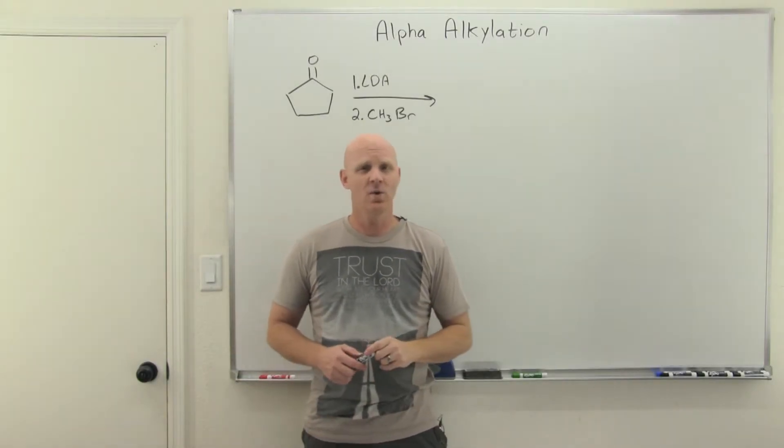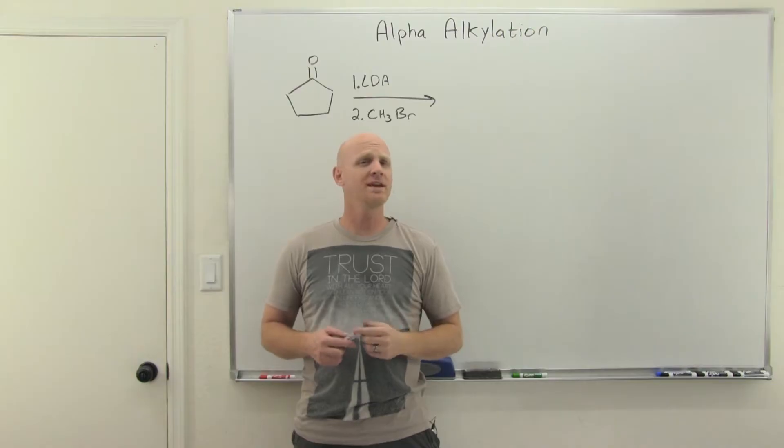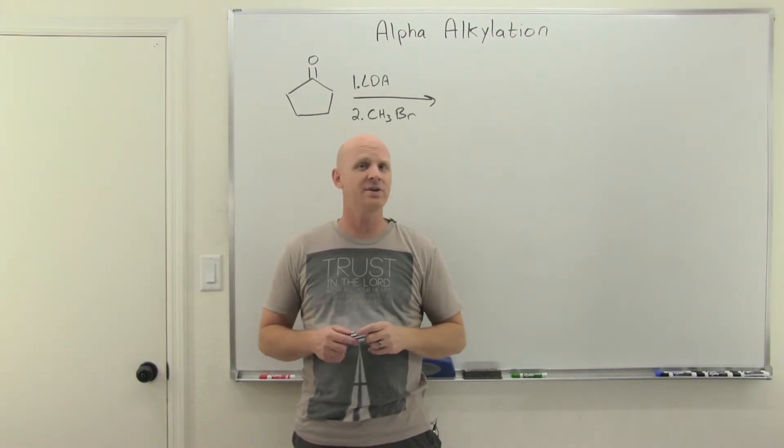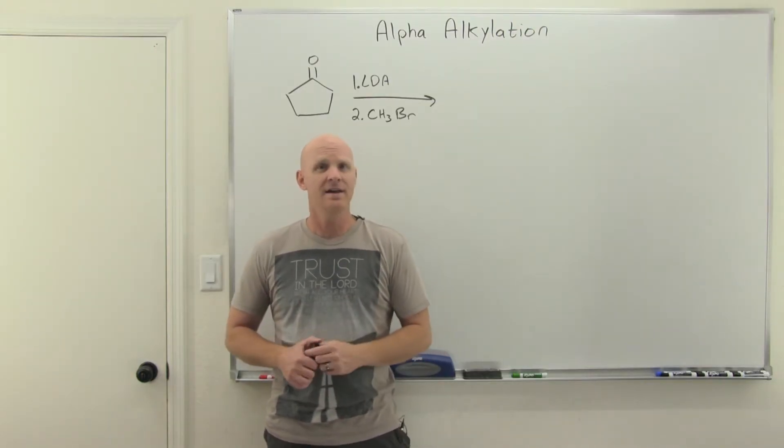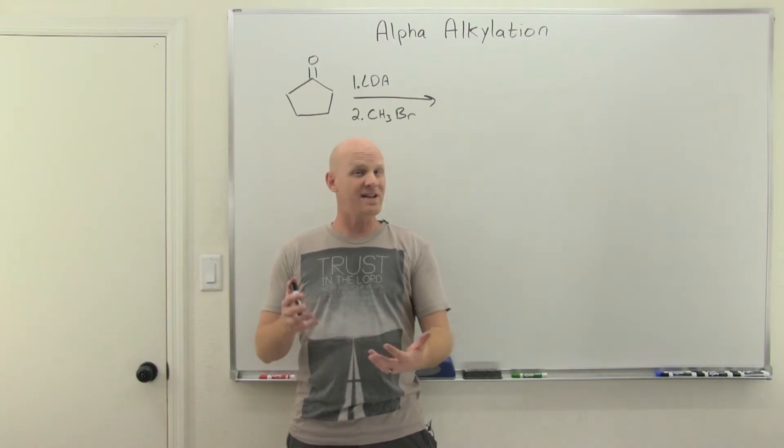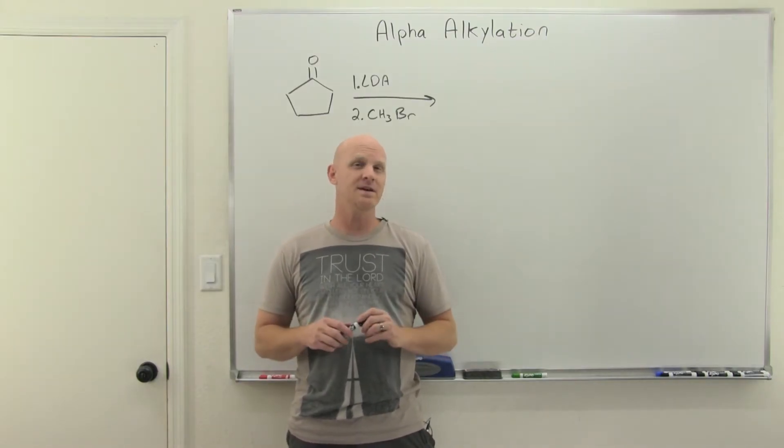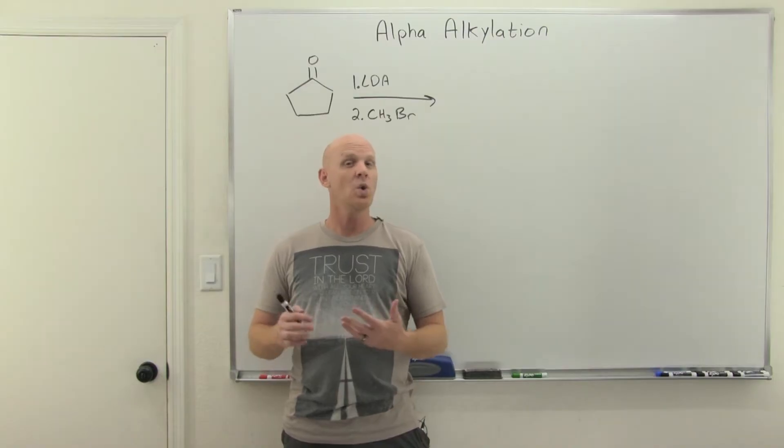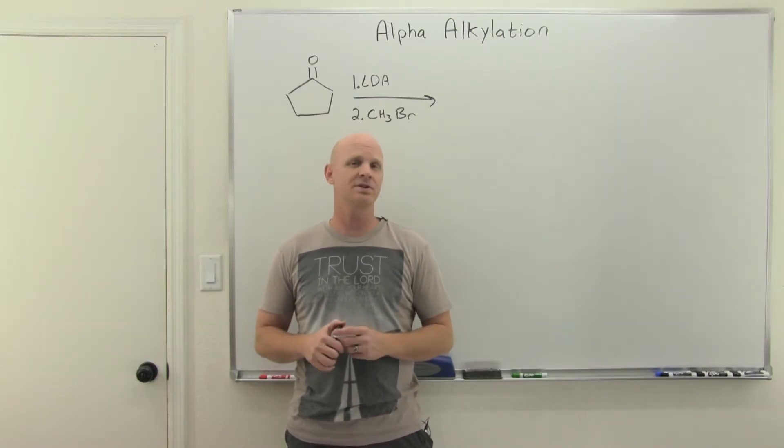Alpha-alkylation is going to be the topic of this lesson, and we're going to find out we're going to use LDA here to form an enolate, and that enolate is just going to attack an alkyl halide in an SN2 reaction. That's rather harsh conditions with LDA, that super strong base, and we have a much milder way to accomplish the same task. It's called the Stork reaction, or the Stork enamine synthesis.